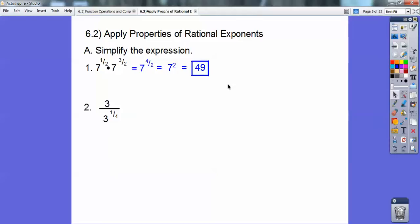Okay, this one here, these are the same bases right here, so if there's no exponent, there's a 1 right here. So when it's in this form, it's 3 to the 1 minus 1 fourth. 1 minus 1 fourth is 3 fourths, so it's 3 to the 3 fourths.